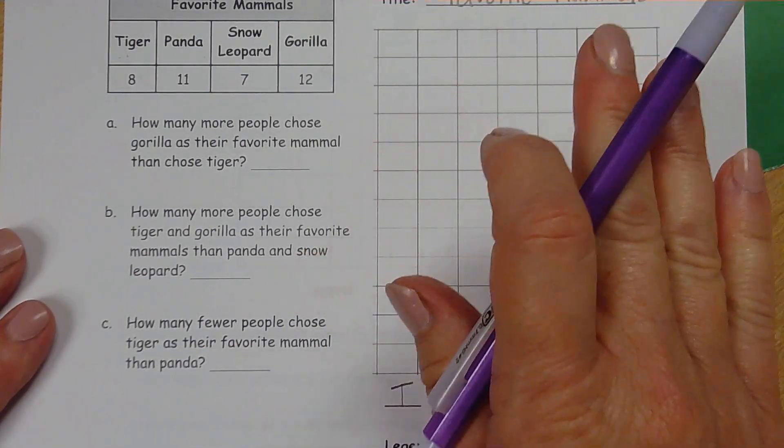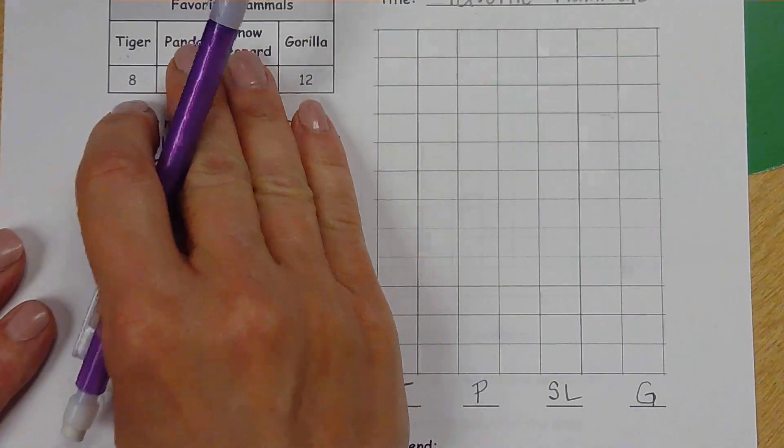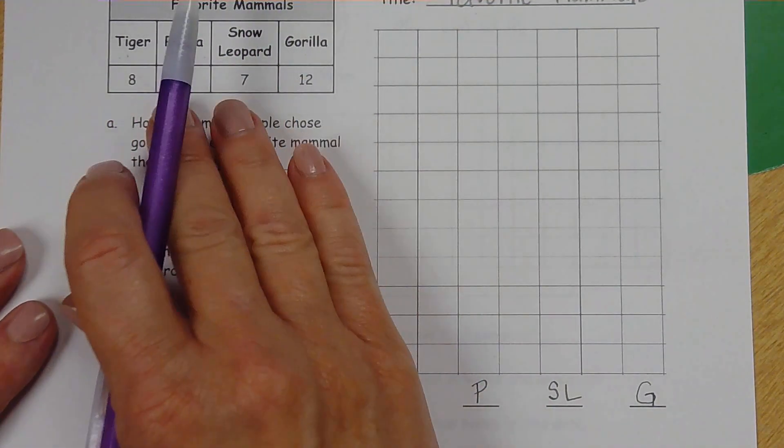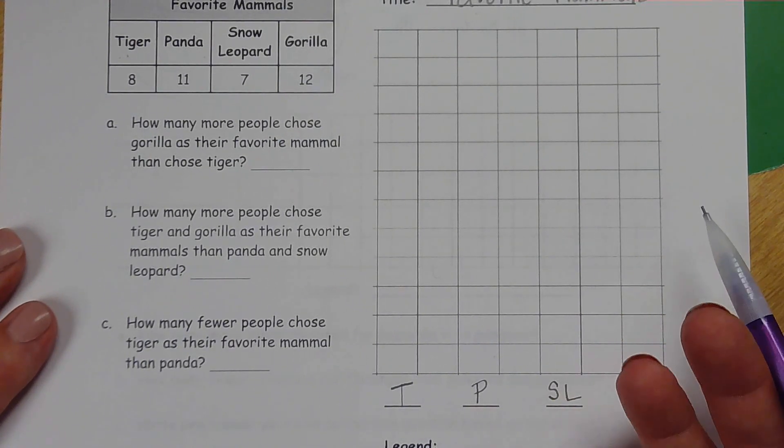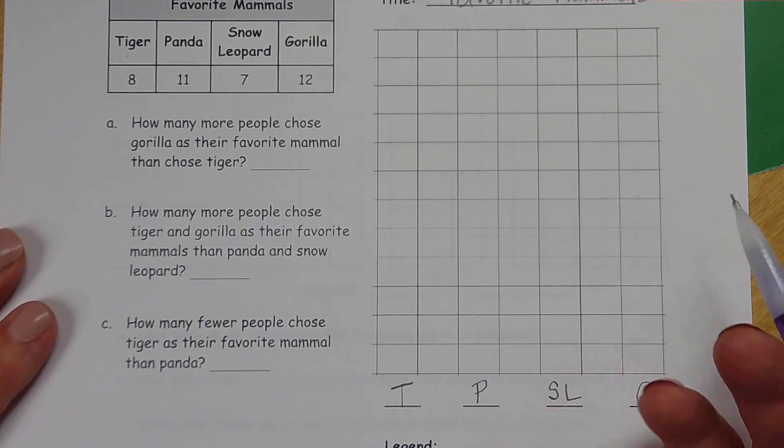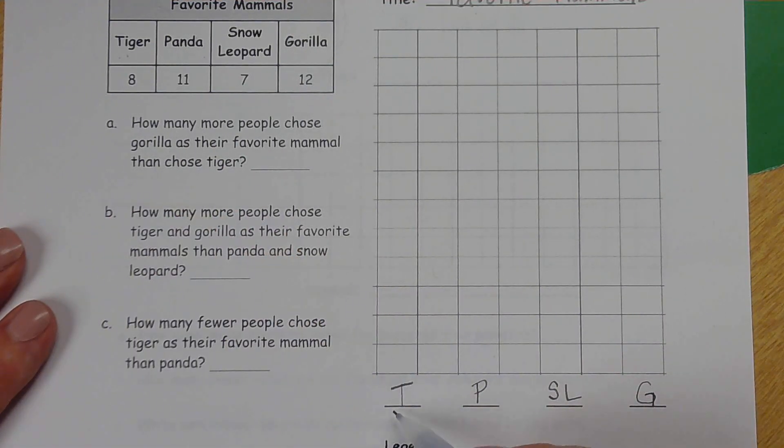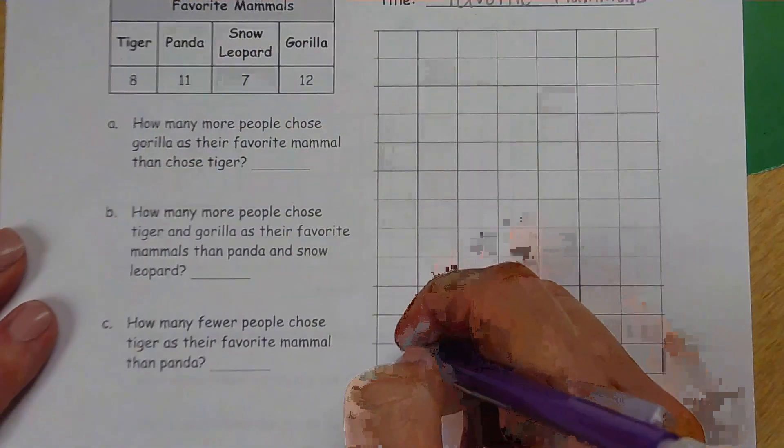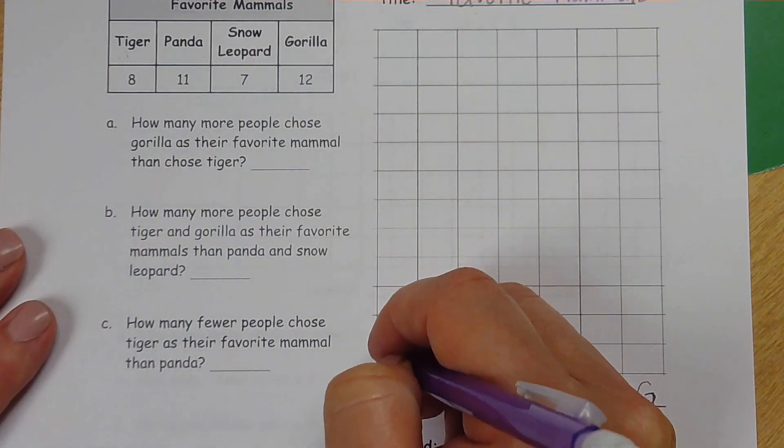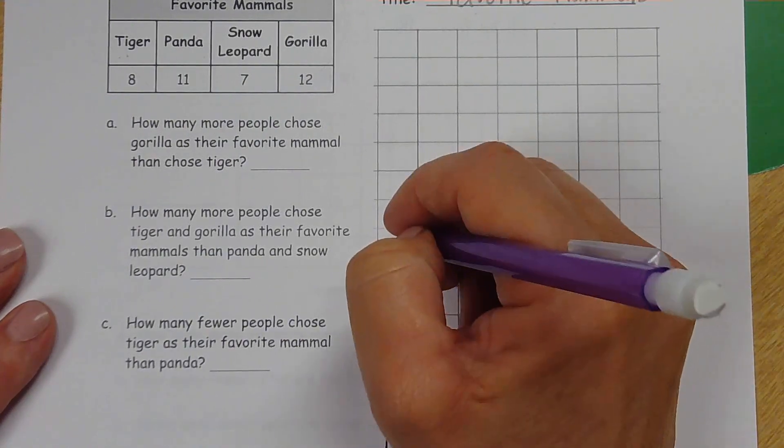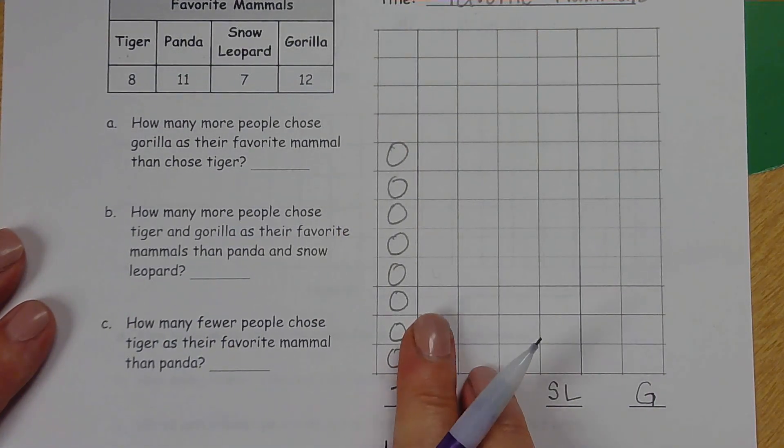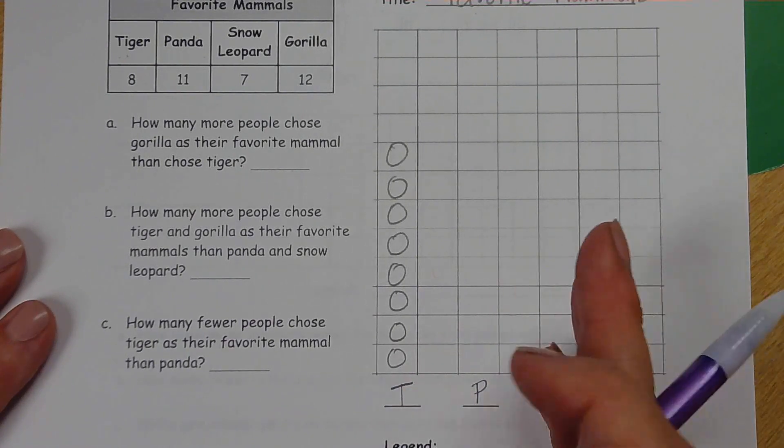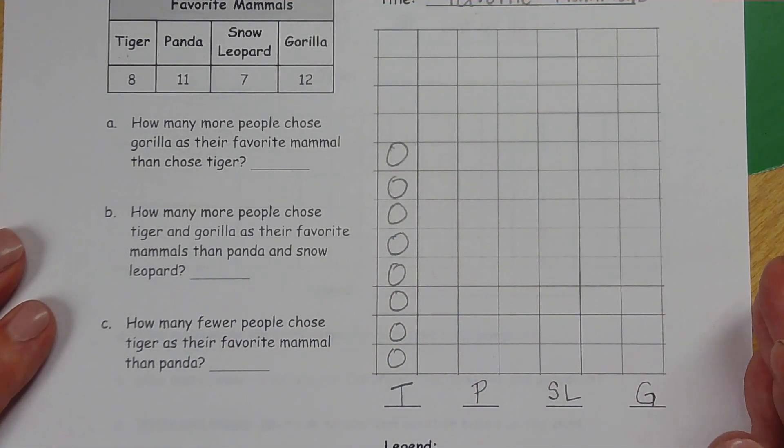We have to first make our graph based on this information, and then we can answer the questions. We are going to use a circle. A circle is a picture, but it's a quick and easy thing to draw so that all of our time won't be spent on drawing instead of math. So for our tiger, there were eight tigers. I'm going to draw one circle in each of eight boxes: one, two, three, four, five, six, seven, eight. We're skipping a line here between these two so that there's more clarity about which is which.